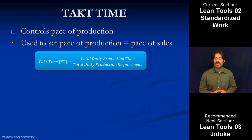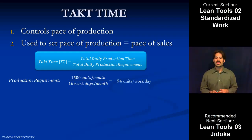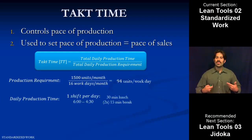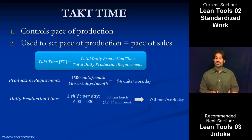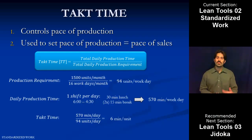As an example, say we need to build 1,500 units a month — that's what our customer is ordering — and we know that we work 16 days a month. That comes out to 94 units per day that we need to make in order to satisfy our customer demand. If we work one shift a day from 6 to 4:30 with lunch and a couple breaks, that gives us 570 minutes per workday building product. So the takt time is: we need to make 94 units a day and we have 570 minutes, meaning we need to spend 6 minutes building each unit.